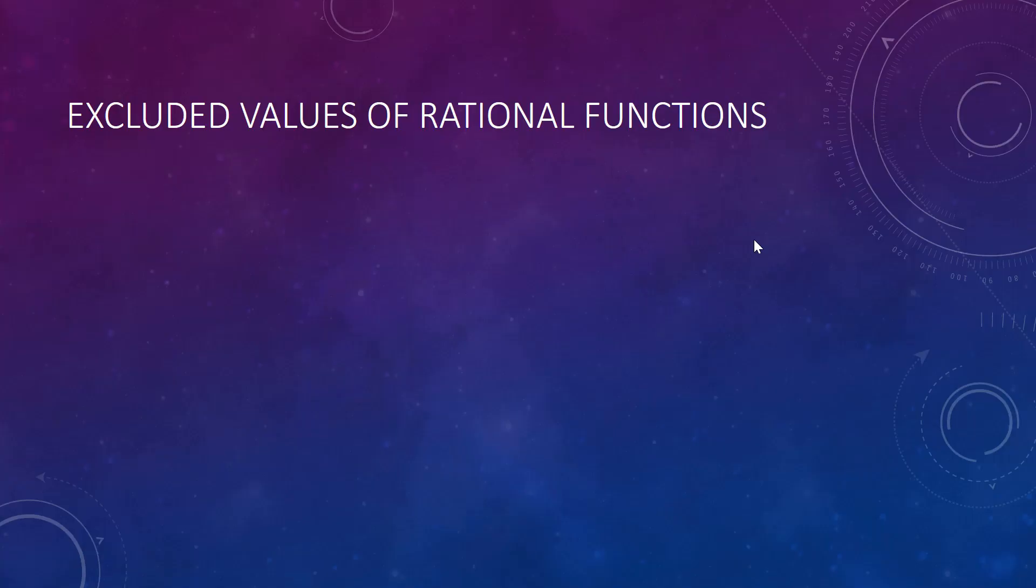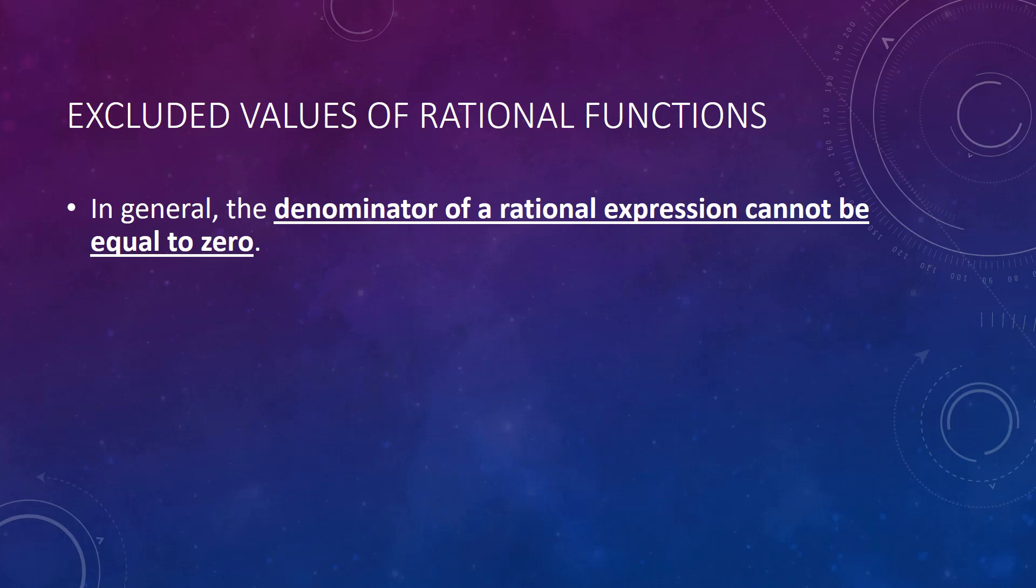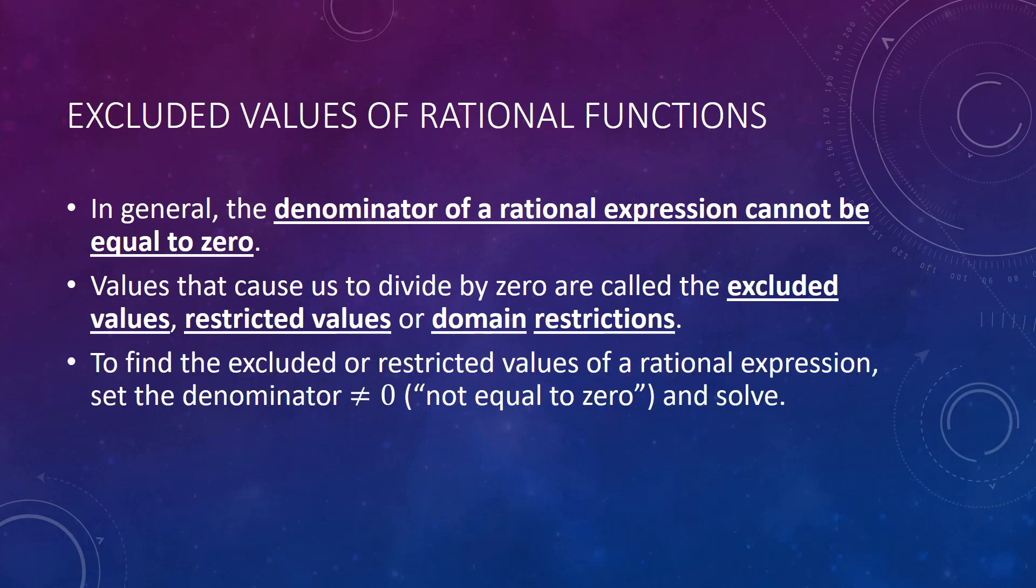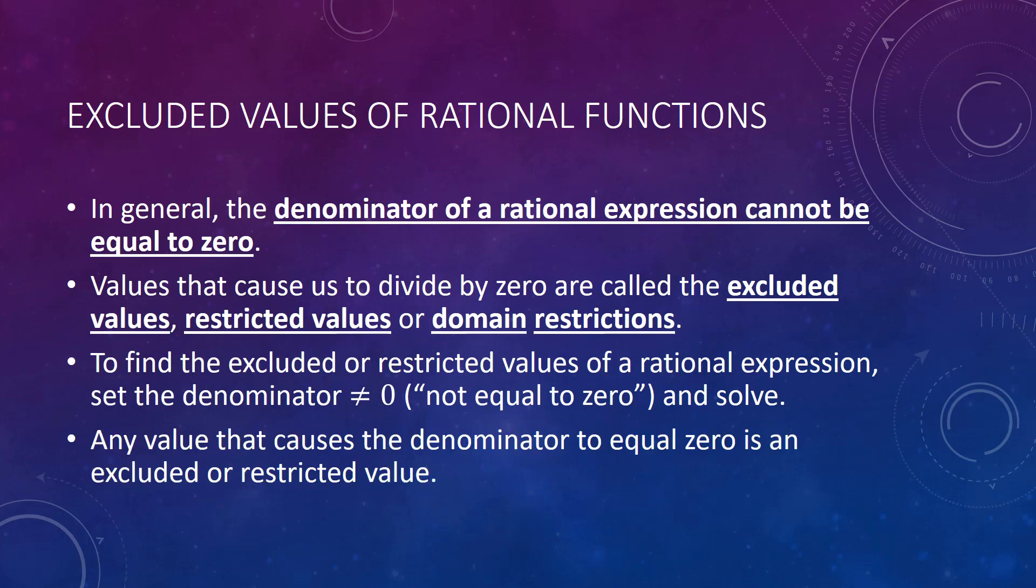Let's talk about excluded values of rational functions. In general, the denominator of a rational expression cannot be equal to 0. Values that cause us to divide by 0 are called the excluded values, restricted values, or domain restrictions. To find the excluded or restricted values of a rational expression, we set the denominator to not equal to 0, meaning not equal to 0, and solve. Any value that causes the denominator to equal 0 is an excluded or restricted value.